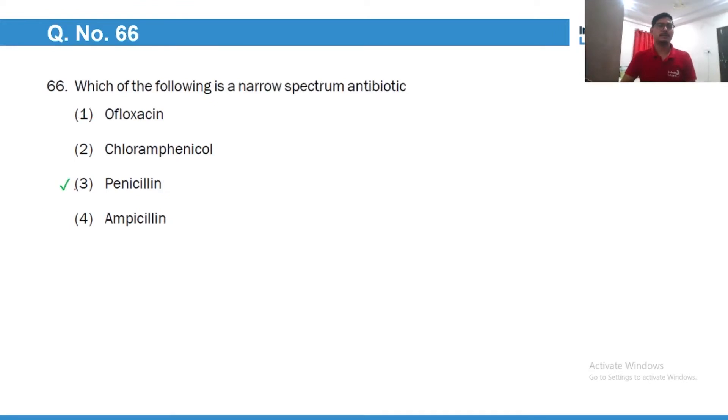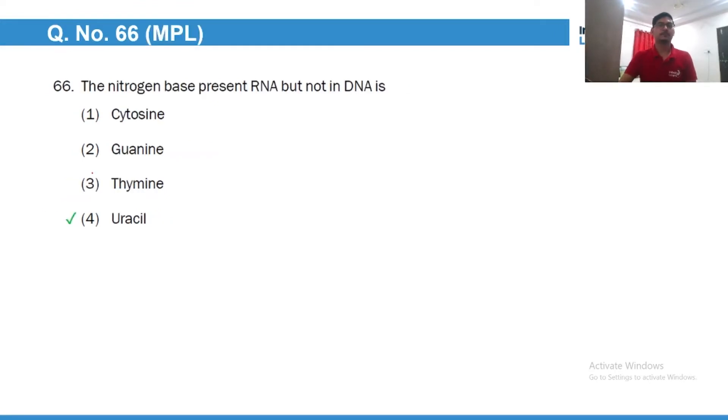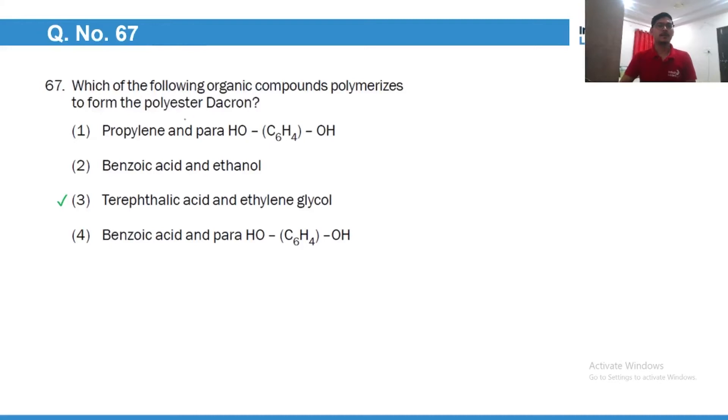Narrow spectrum antibiotic is penicillin. Nitrogen base which is present in RNA but not in DNA, of course uracil, that is the correct answer. Which of the following organic compounds polymerizes to form the polyester Dacron? Yes, terephthalic acid, so this is terephthalic acid and ethylene glycol, so it is an ester.